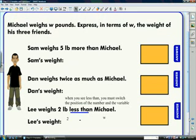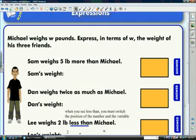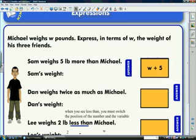Now, in this slide, we have Michael. And we know he weighs w pounds. We want to express in terms of w the weight of his three friends. So we need to read carefully what they're saying. Michael is w, his weight. We don't know his weight. First one, we have Sam weighs 5 pounds more than Michael. Well, that tells me that I have to add the weight of Sam to Michael. So that one would come out looking like w plus 5. The weight, plus 5 more pounds.